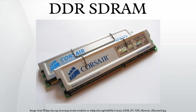High-density memory modules are assembled using chips from multiple manufacturers. These chips come in both the familiar 22×10mm TSOP-II and smaller square 12×9mm FBGA package sizes.